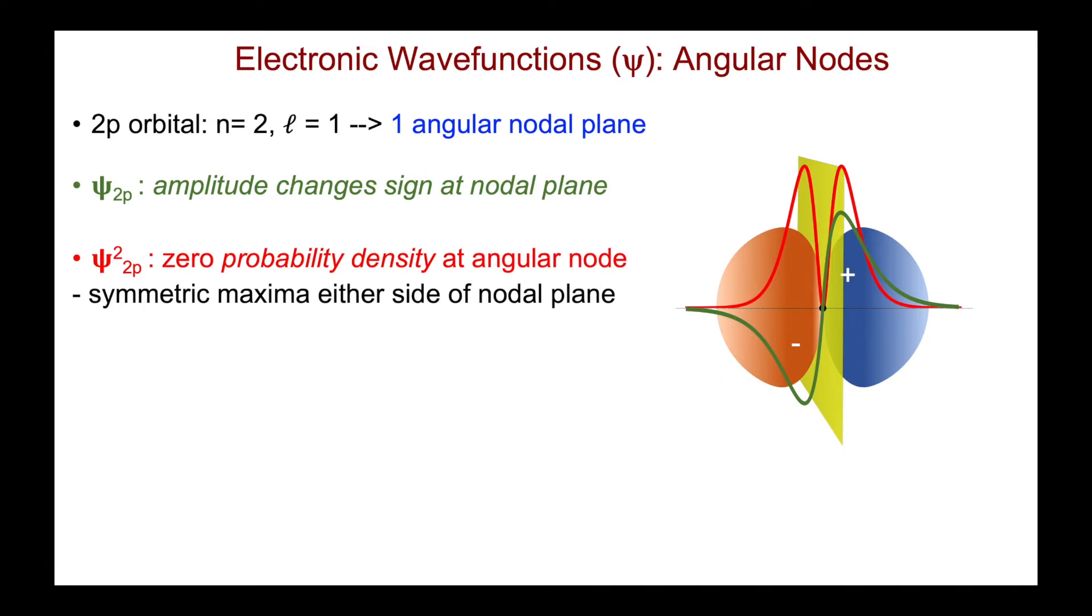Now, if we square the wave function to get the probability density, we see that there is no probability density at the angular node. So again, there is no chance of finding the electron at that particular point. And in this case, that angular node goes right through the nucleus. Psi squared has symmetric maxima either side of the nodal plane, and so there's equal probability of finding the electron on either side of the plane.